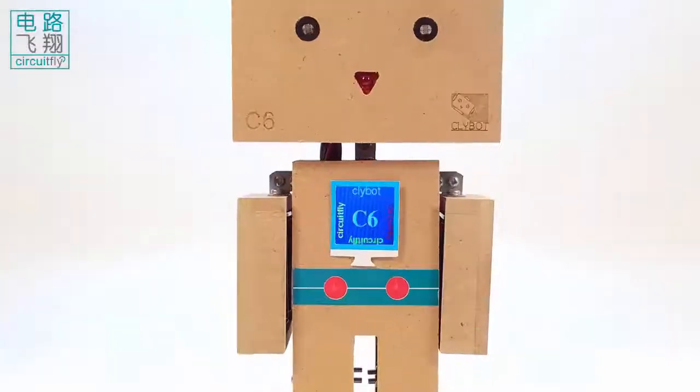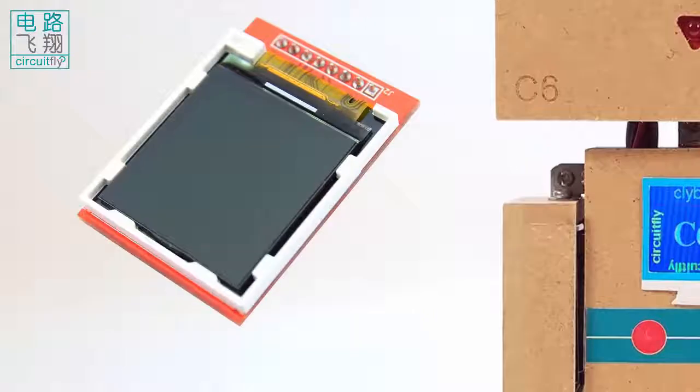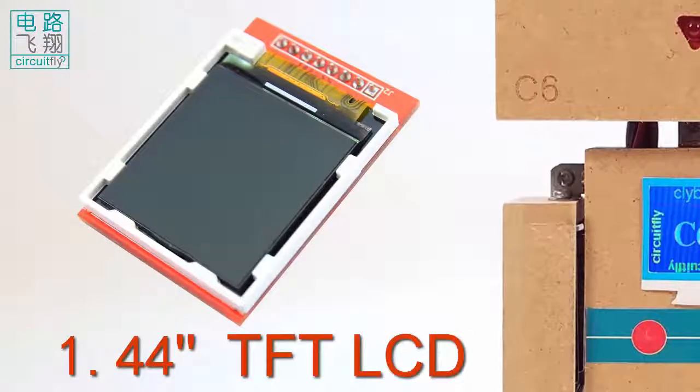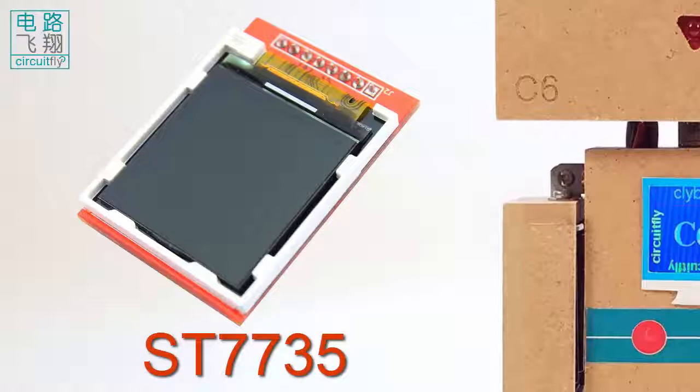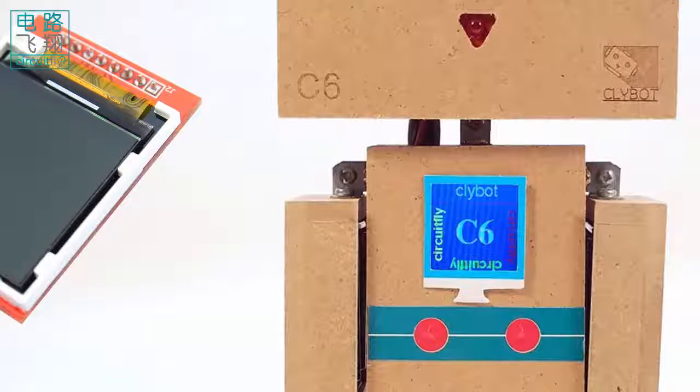A color TFT LCD with the size of 1.44 inches is used in this experiment. It uses a single chip controller ST7735 for graphic control. More information of the LCD can be found in the Clibor C6 kit folders.